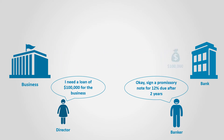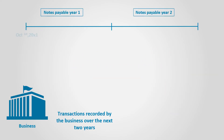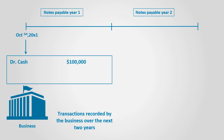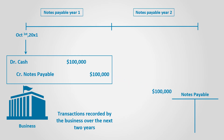Now let's see how to account for notes payable. Assume that on October 1st, a business received a loan from a bank. The business will sign a note and send it to the bank indicating that it is going to pay $100,000 after two years, in addition to an annual interest of 12%. On that date, the business received cash, so cash is debit for $100,000 and notes payable is credit by the same amount.